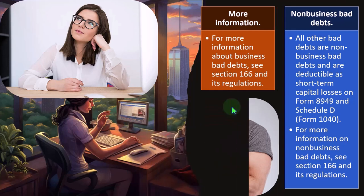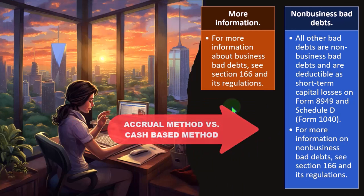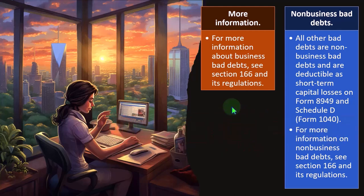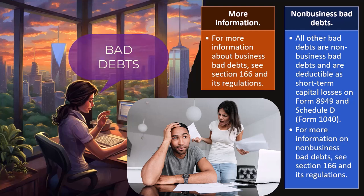We've talked about the accrual method and the cash-based method, but it's also worth pointing out that some companies — as you might see in accounting courses — use an allowance method, which is a method to try to estimate the amount of bad debts that are not going to be collectible. That's not always the case for small businesses, but if you use that kind of method, you want to make sure you're writing off bad debts in compliance with the tax code.